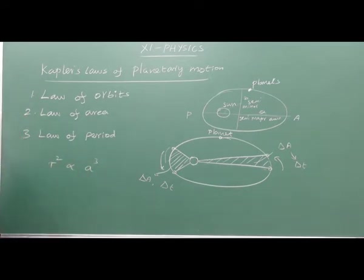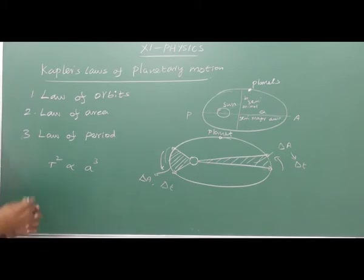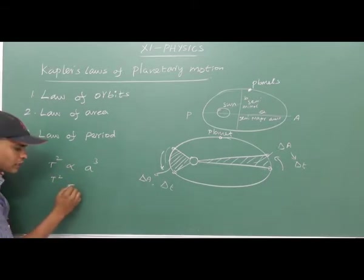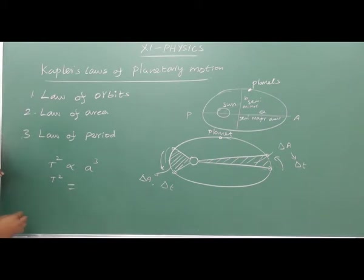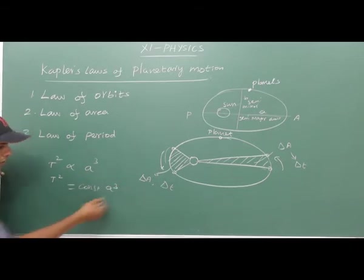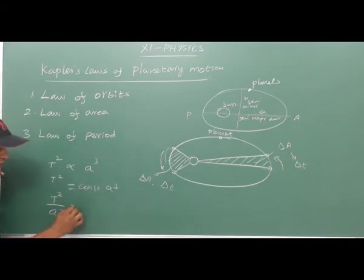The semi-major axis of the ellipse is A. So T² is directly proportional to A³. If T² is directly proportional to A³, then T²/A³ is equal to a constant — the proportionality constant.